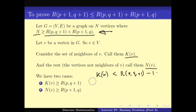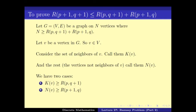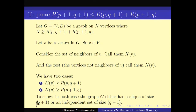Thus we get these two cases: either |K(V)| ≥ R(P, Q+1) or |N(V)| ≥ R(P+1, Q). And we need to prove that in either case, we get either a clique of size P+1 or an independent set of size Q+1. If we can prove this, then we've shown that any graph G with n ≥ R(P,Q+1) + R(P+1,Q) has a clique of size P+1 or an independent set of size Q+1.